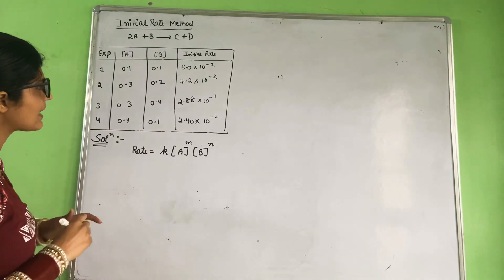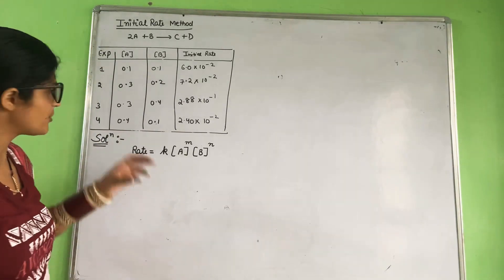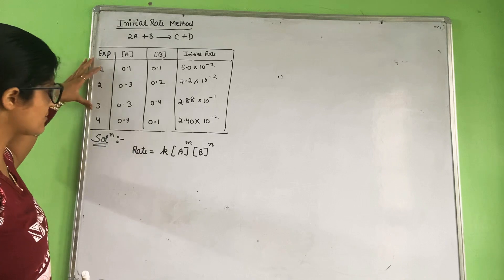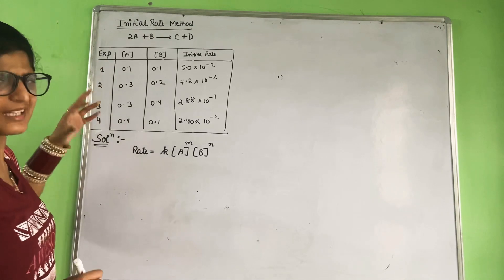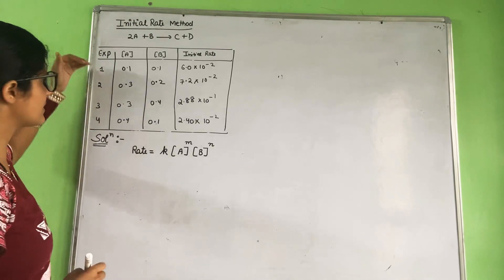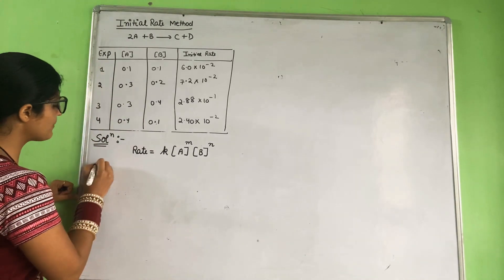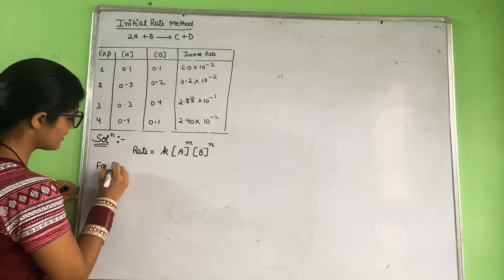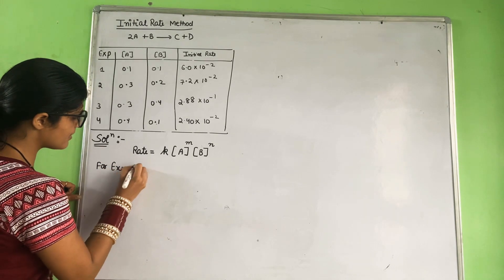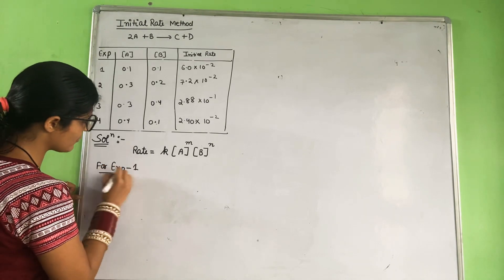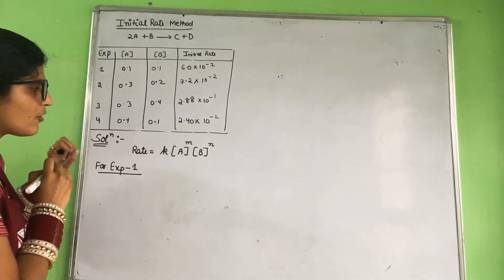In any question, we will have three or four experiments. In every experiment, we have a rate law equation. This is the general rate law, and you have to find the values of m and n.